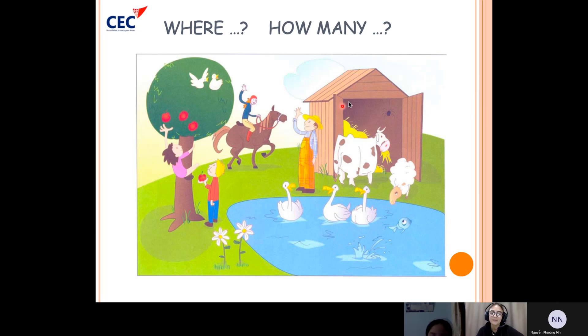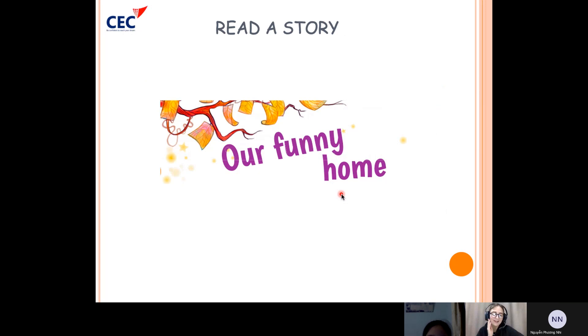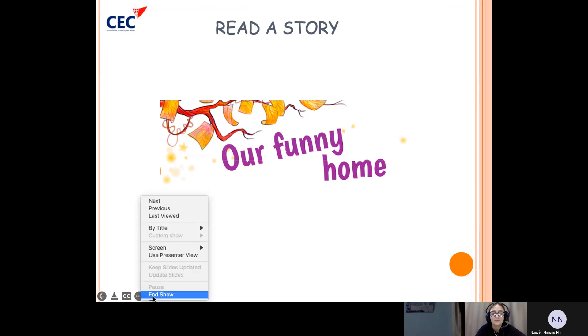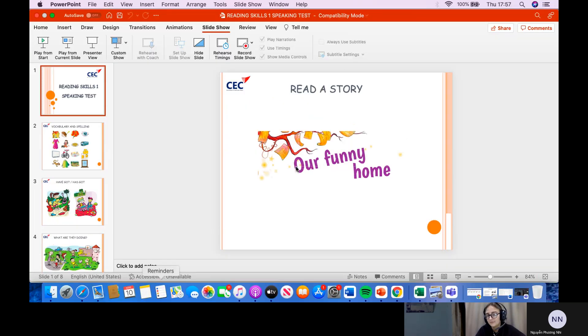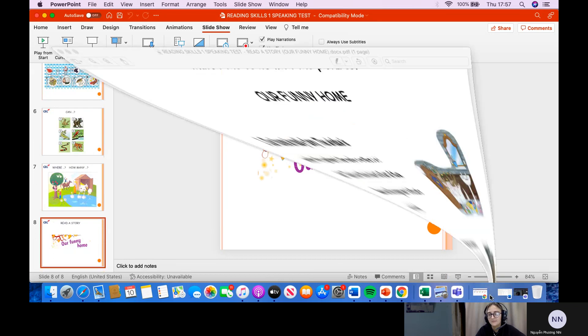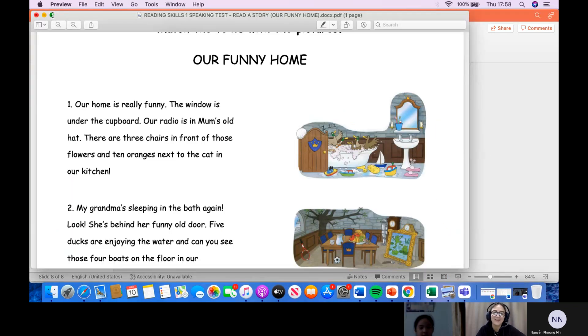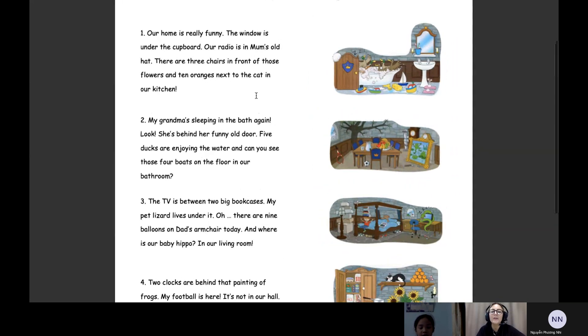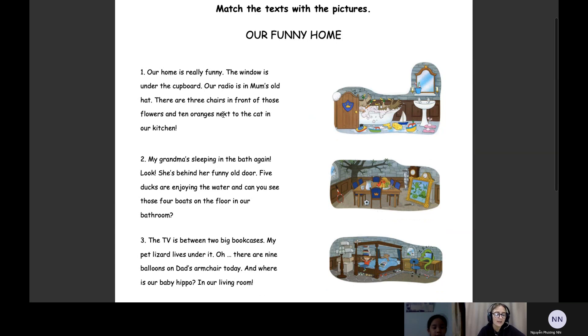The cow... the cow is... is it next to, behind, in front of, on, under? The cow is on the ground. Good. Okay, okay, now we're going to read a story. Okay, let's read a story. Okay, Bamoan, can you see this is our funny home? Can you read it for me?